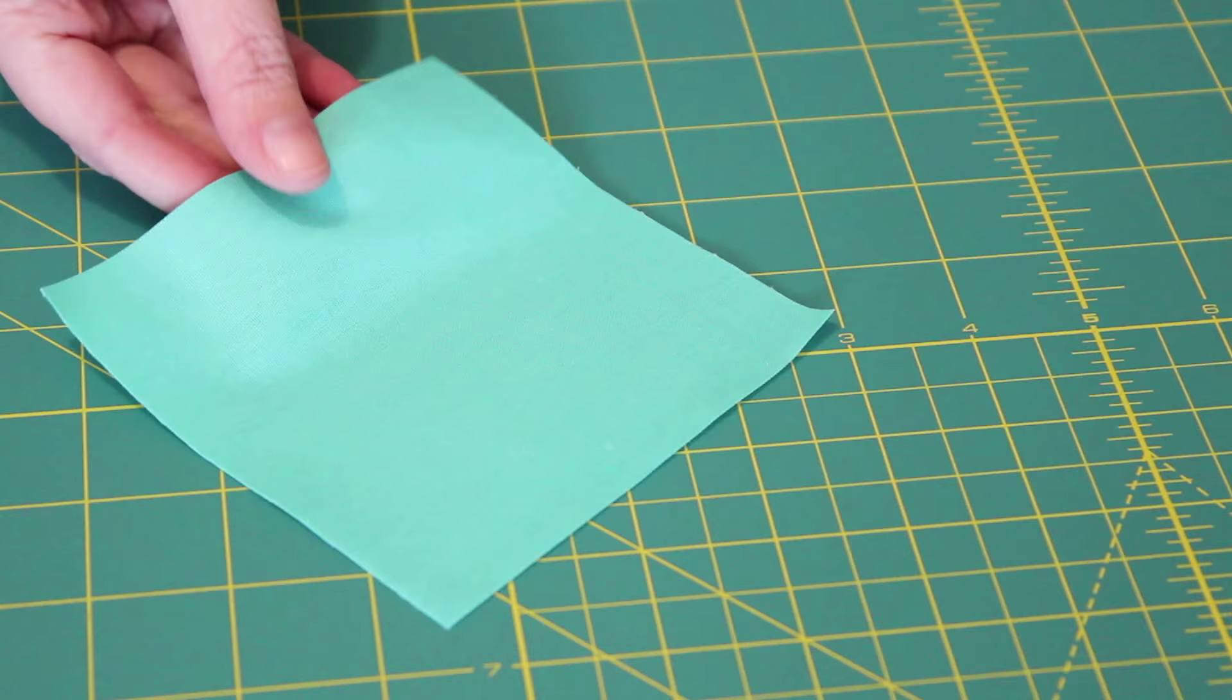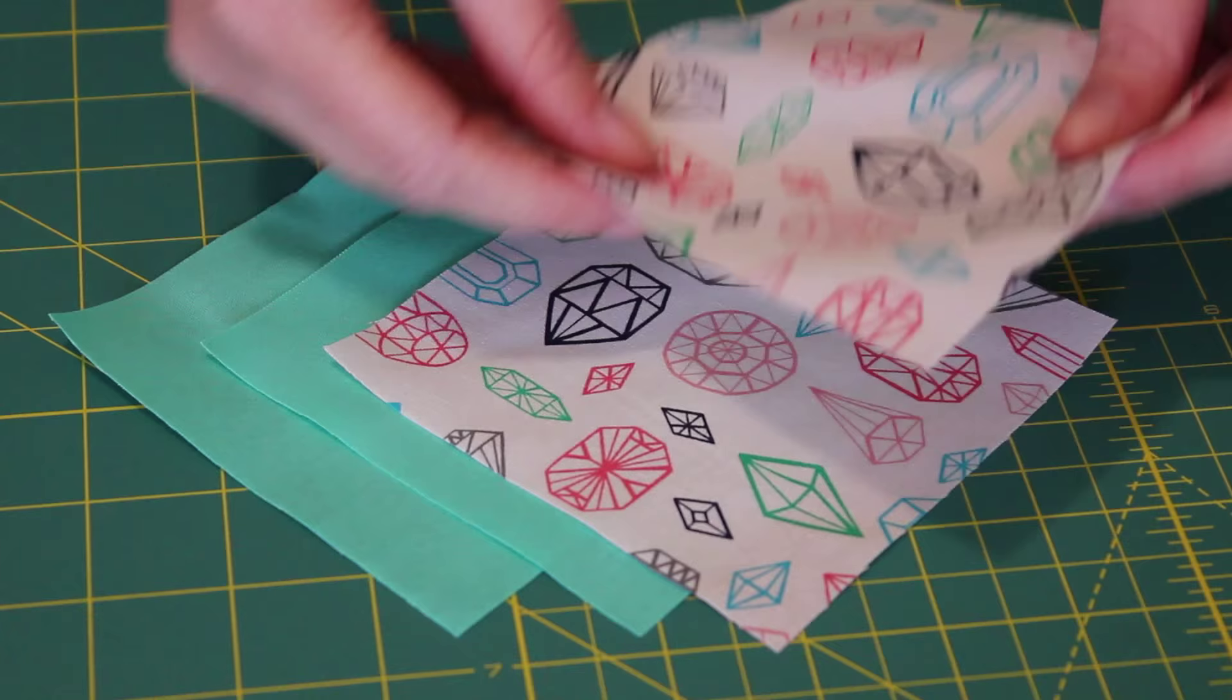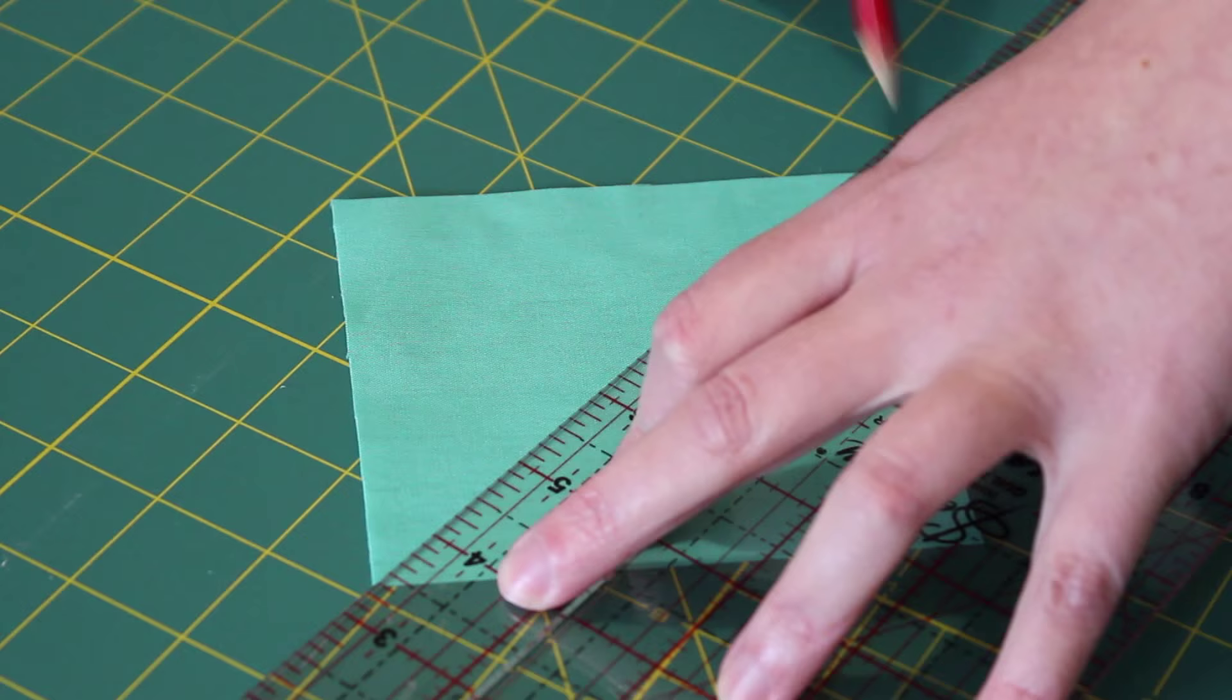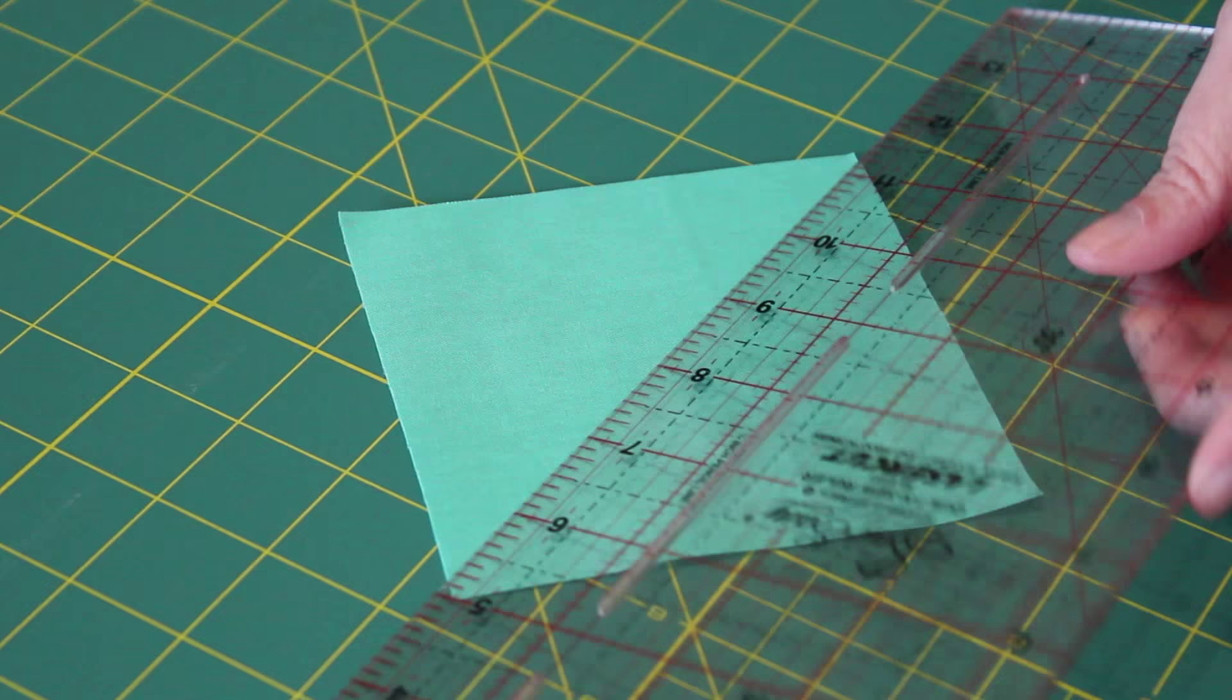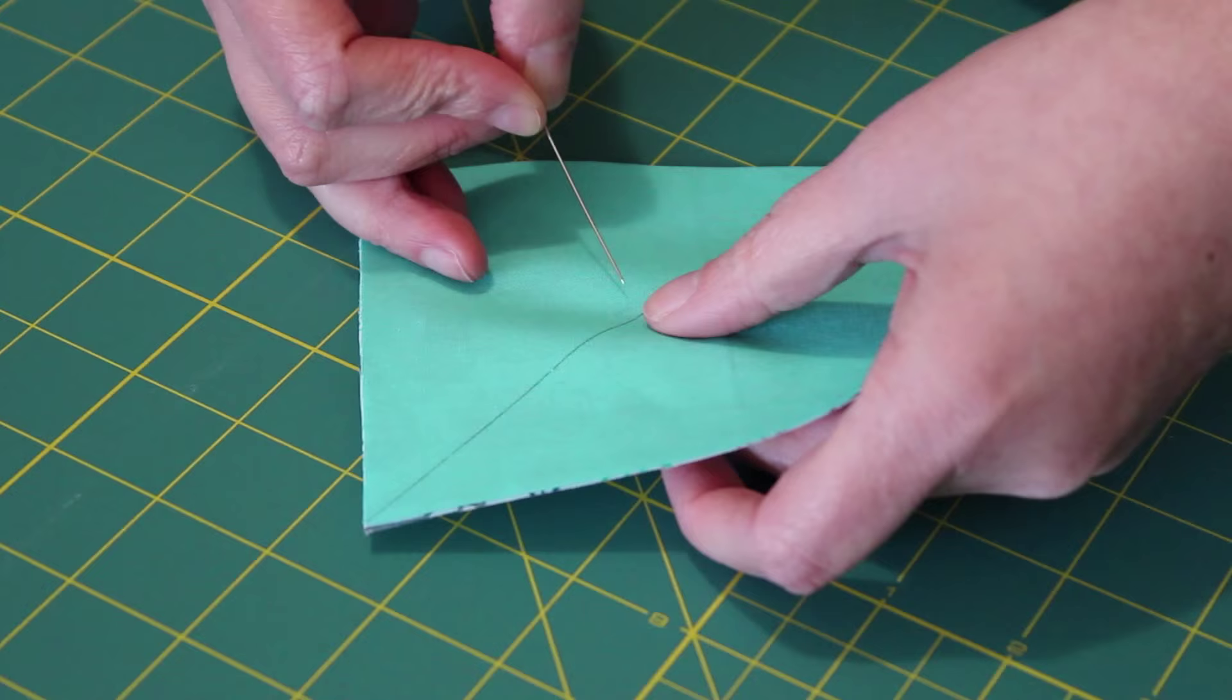To make this block, you simply need to cut two 4.5 inch squares from two contrasting fabrics. To begin, mark a diagonal line across the back of one pair of squares using a lead pencil and ruler. Pair each of these with the other squares right sides together and then pin into place.